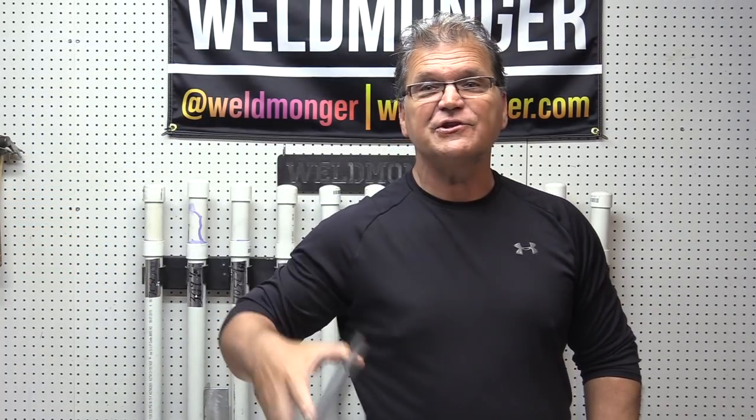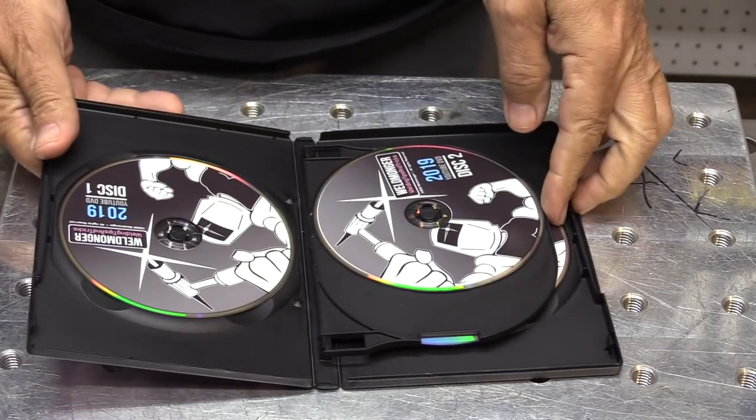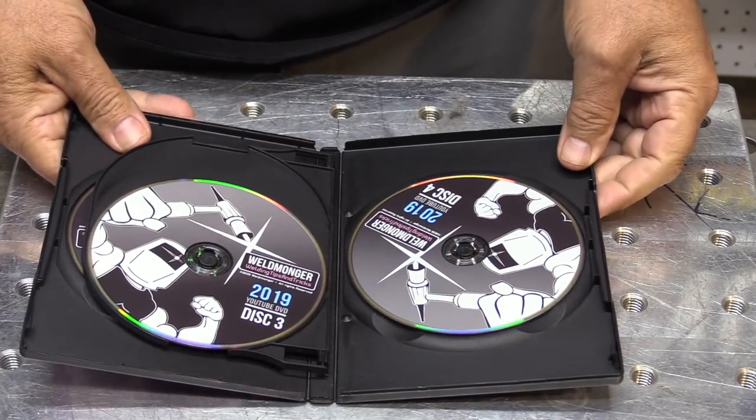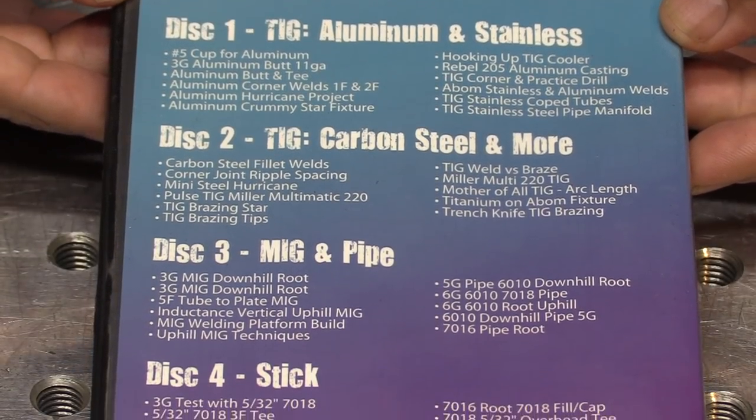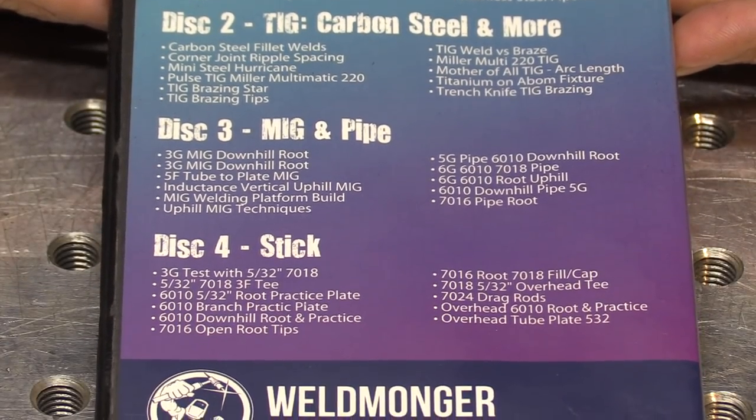The 2019 DVD set is done and ready for you at Weldmonger.com. It's a four-disc set with a table of contents laid out on the back and in the menus on each disc.